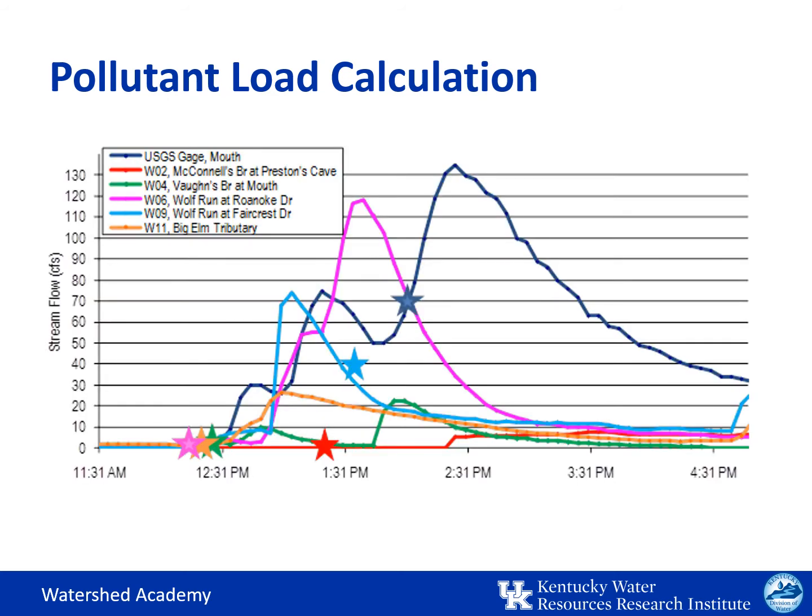This graph from the Wolf Run watershed shows how much load calculations could vary depending on which flow rate is chosen over a four-hour time period. All of the sampling events captured rising water at the site, with the exception of the light blue star. Using an average of the flow measured in the field would only provide a representation of the time in which the sampler happened to arrive at the site. It's therefore important that the flow conditions in the watershed are normalized in some way.